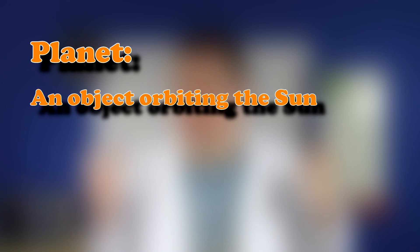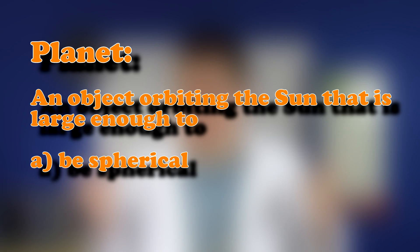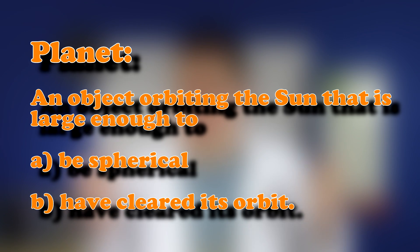Their decision resulted in the following definition: a planet is an object orbiting the sun that is large enough to be both spherical and to have cleared out other objects of comparable size from its orbit. The short version? They decided our solar system had eight planets.